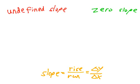I want to contrast undefined slope and zero slope. First, it requires a review of the definition of slope.